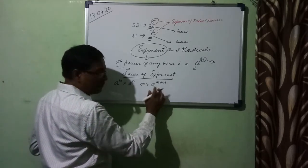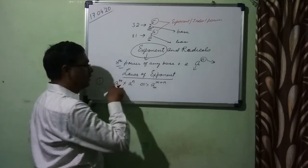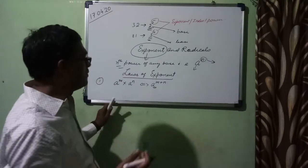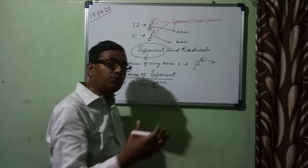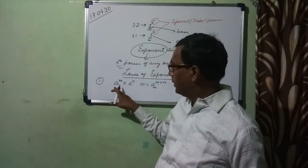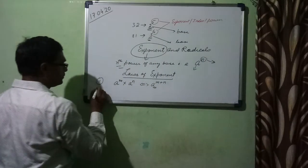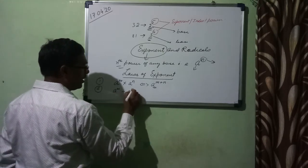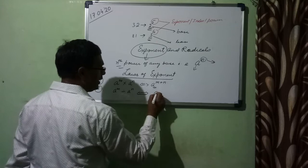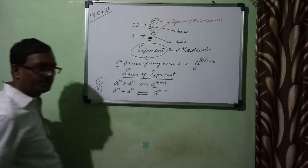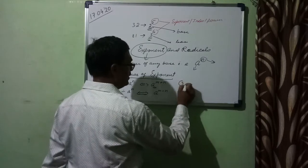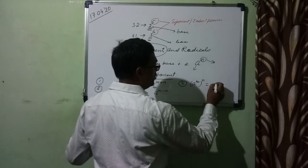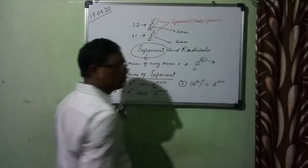This result can be written in either form according to need — sometimes you need to expand it, sometimes you need to take something common and use this form. The second rule: a to the power m divided by a to the power n is equal to a to the power m minus n.